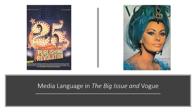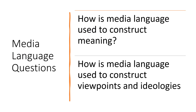Now that we know the 2022 question for the Big Issue and Vogue is going to be centred around media language, I thought this video might be useful. Start by having a look at the types of questions you might get for these two texts. There will be others, but these are two fairly standard ones: how is media language used to construct meaning, and how is media language used to construct viewpoints and ideologies? The two questions are interchangeable and the ideas I'll be going through here will be relevant to both.